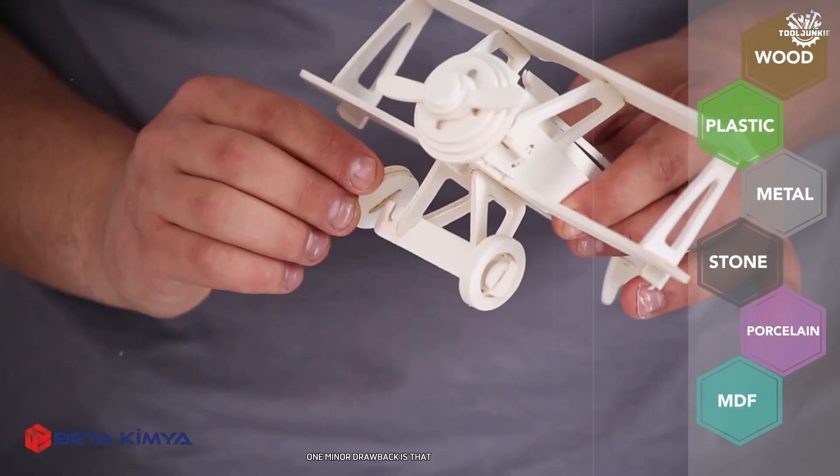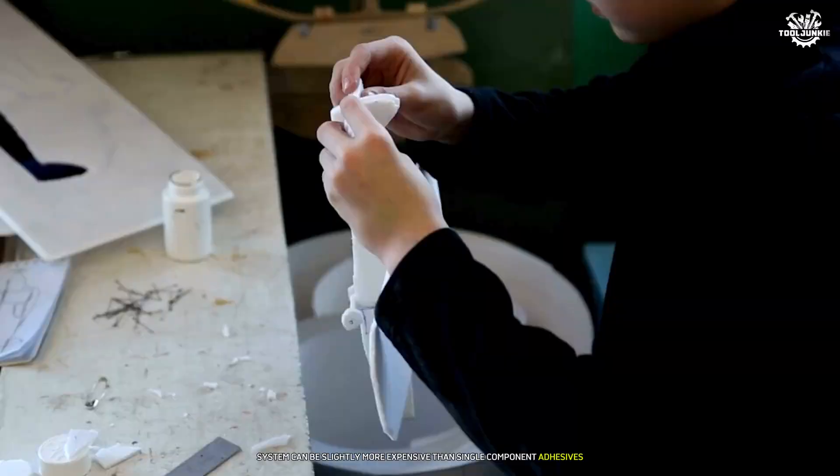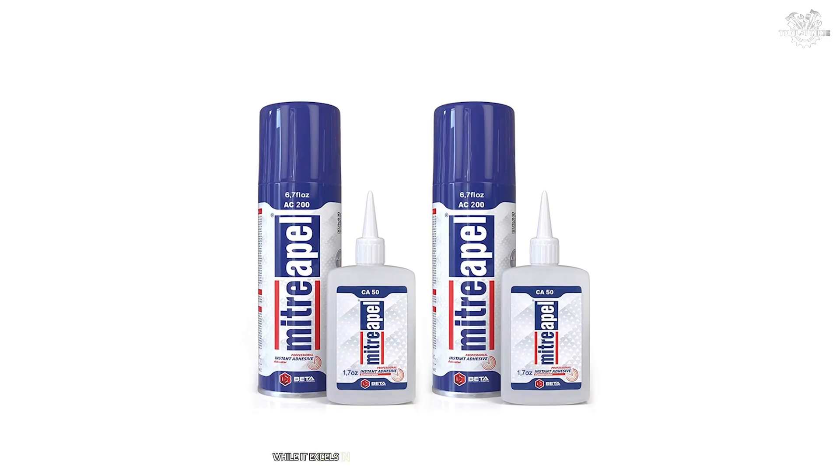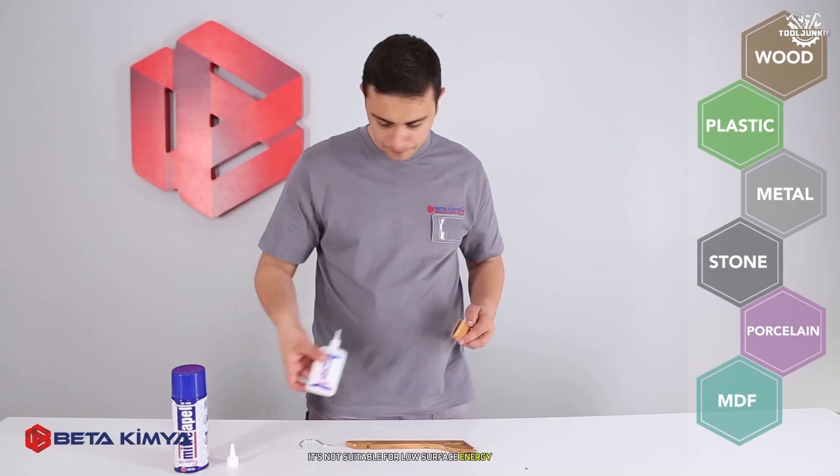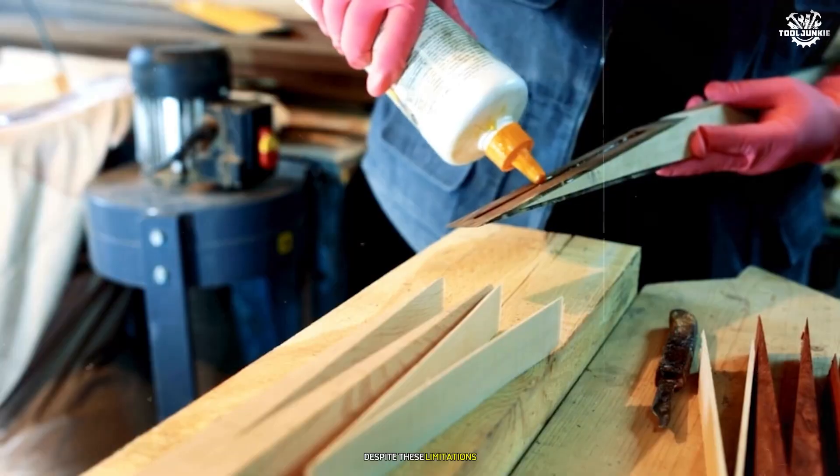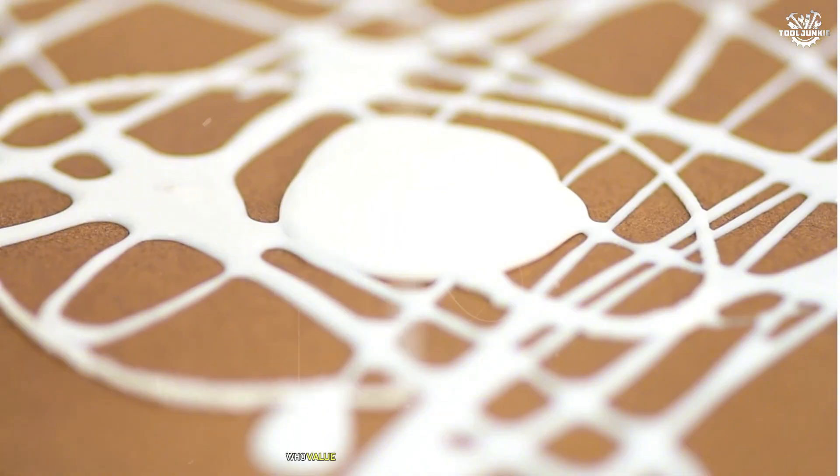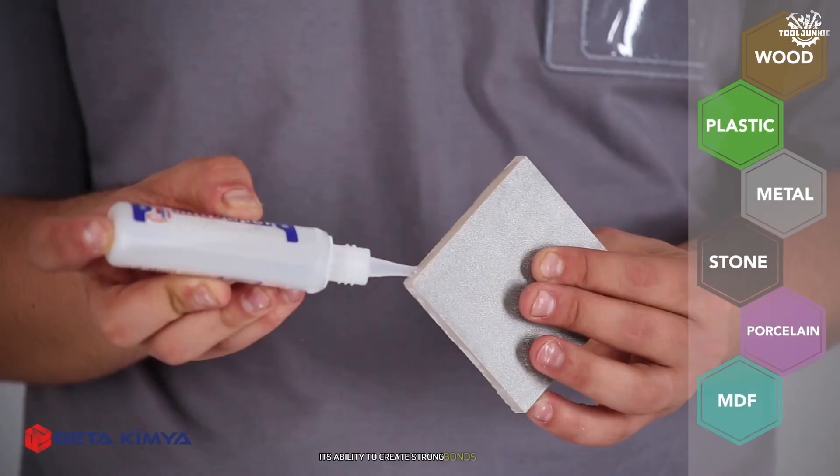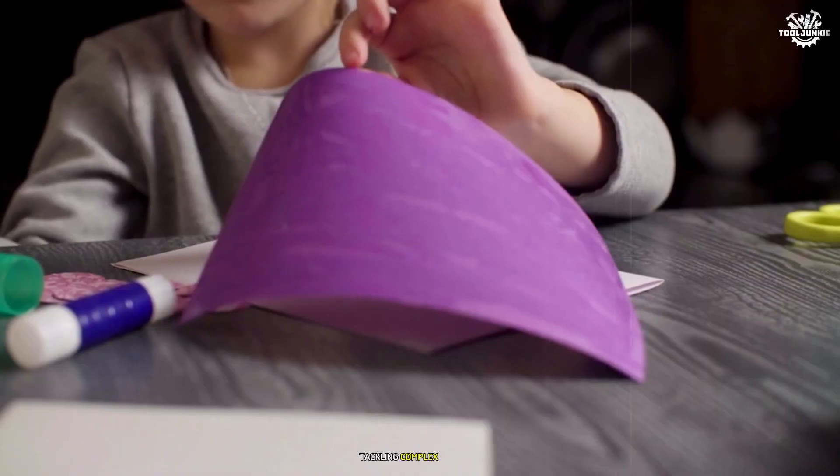One minor drawback is that MITRE Pell's two-part system can be slightly more expensive than single-component adhesives due to the added cost of the activator spray. Additionally, while it excels in bonding most materials quickly and effectively, it's not suitable for low-surface energy plastics like polyethylene or polypropylene. Despite these limitations, MITRE Pell CA glue stands out as one of the best options for PLA users who value speed and reliability in their adhesive solutions. Its ability to create strong bonds instantly makes it an invaluable tool for both hobbyists and professionals tackling complex projects.